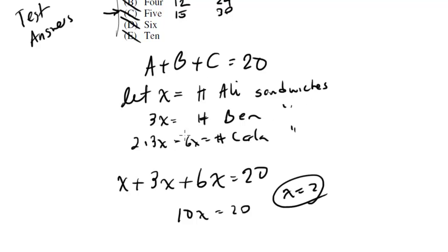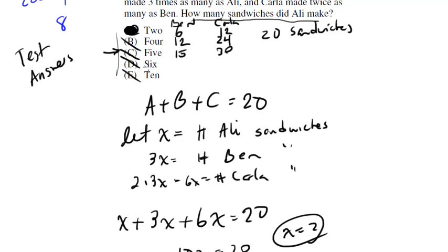Now remember, x stands for number of Allie sandwiches, so the number of Allie sandwiches was indeed 2, and that is the answer right here, as we got before.